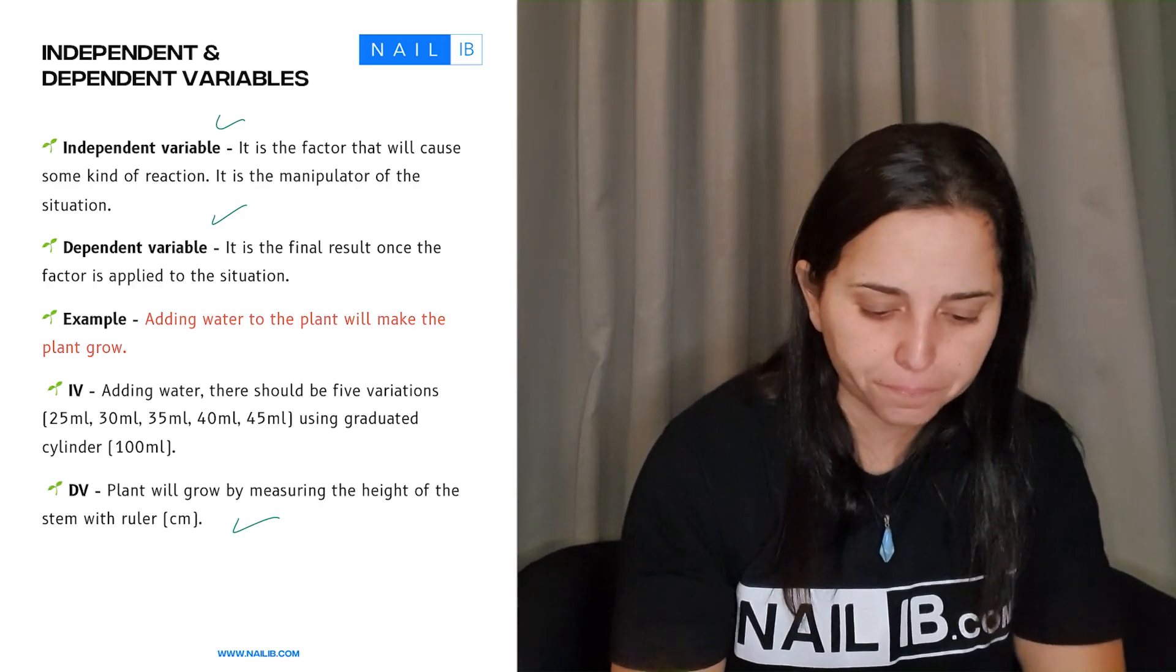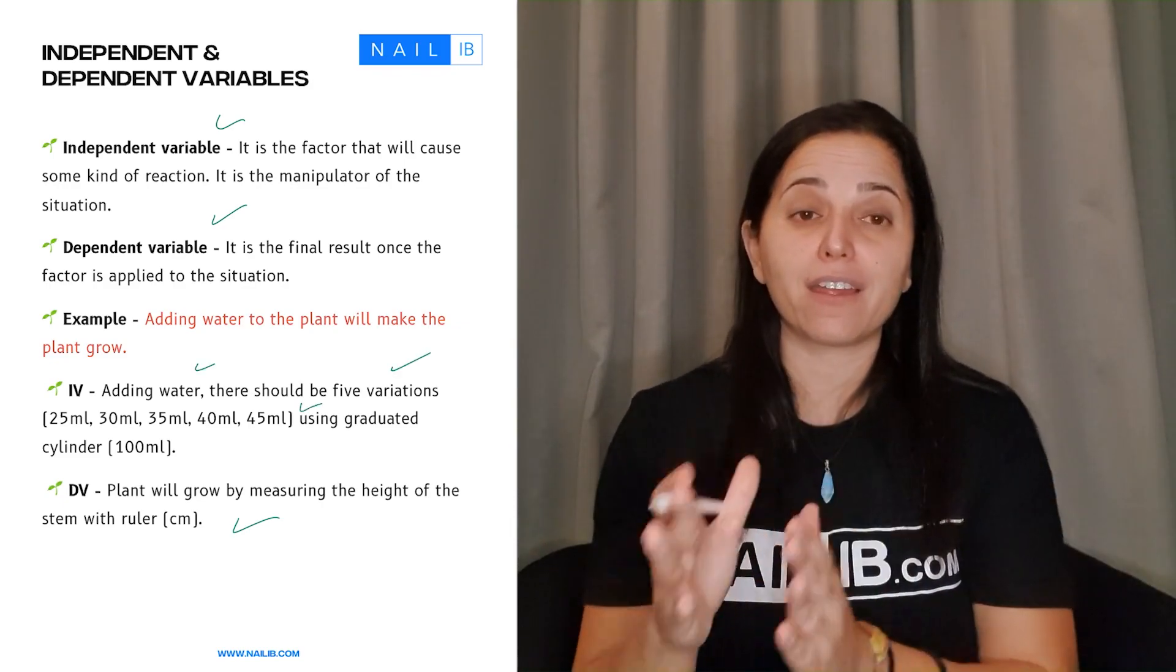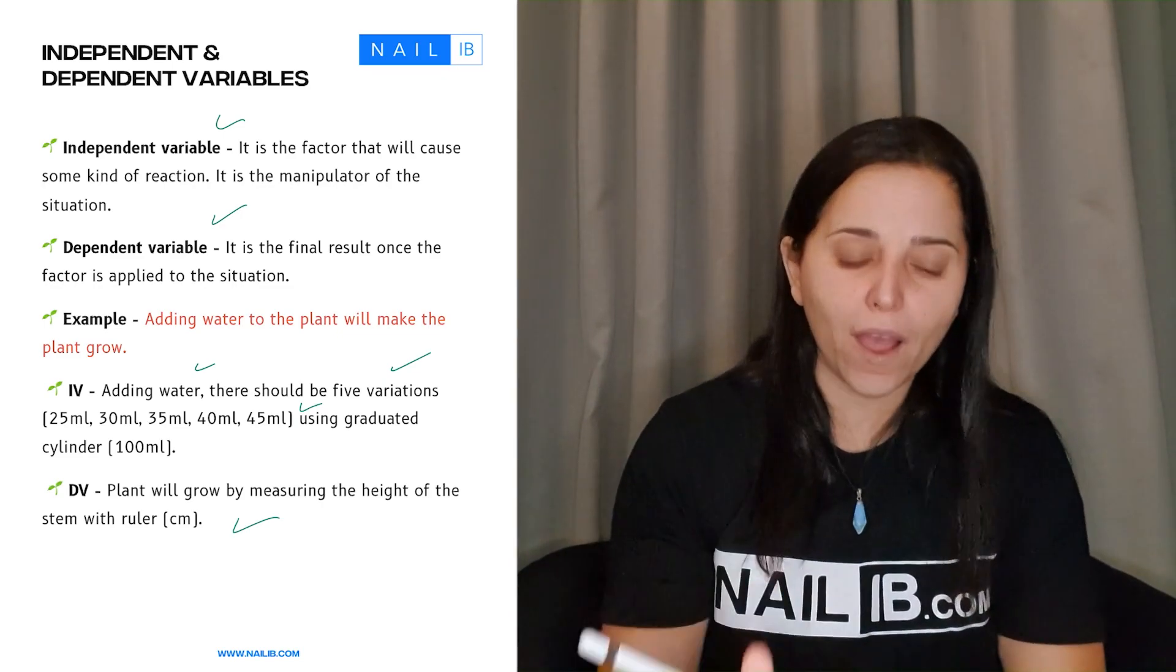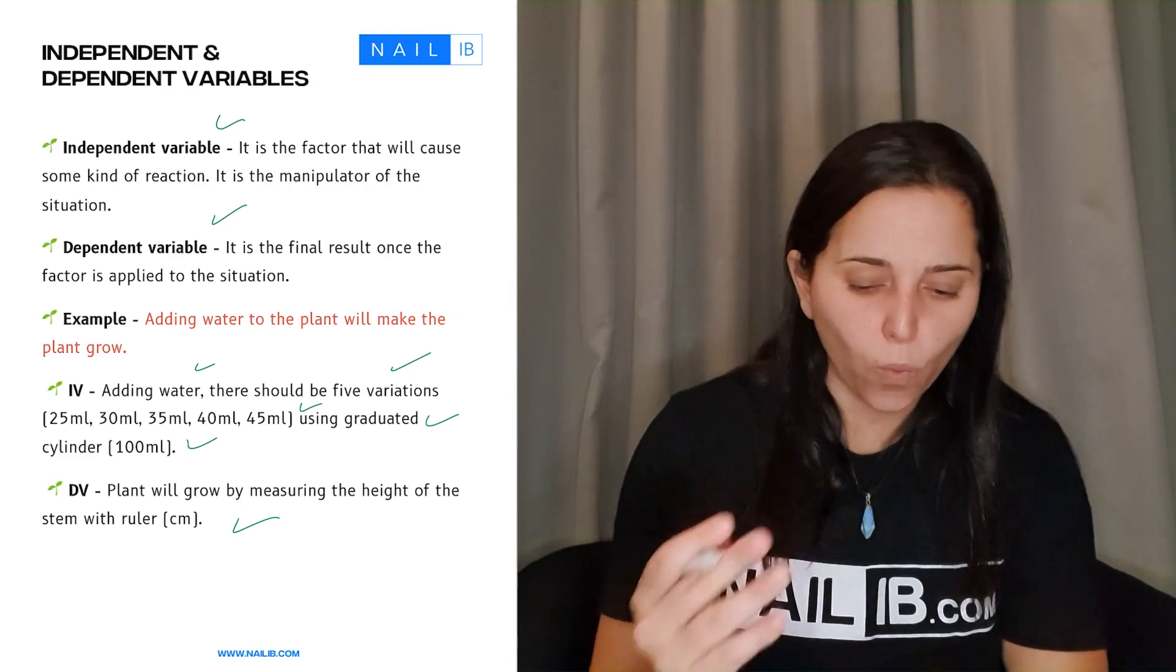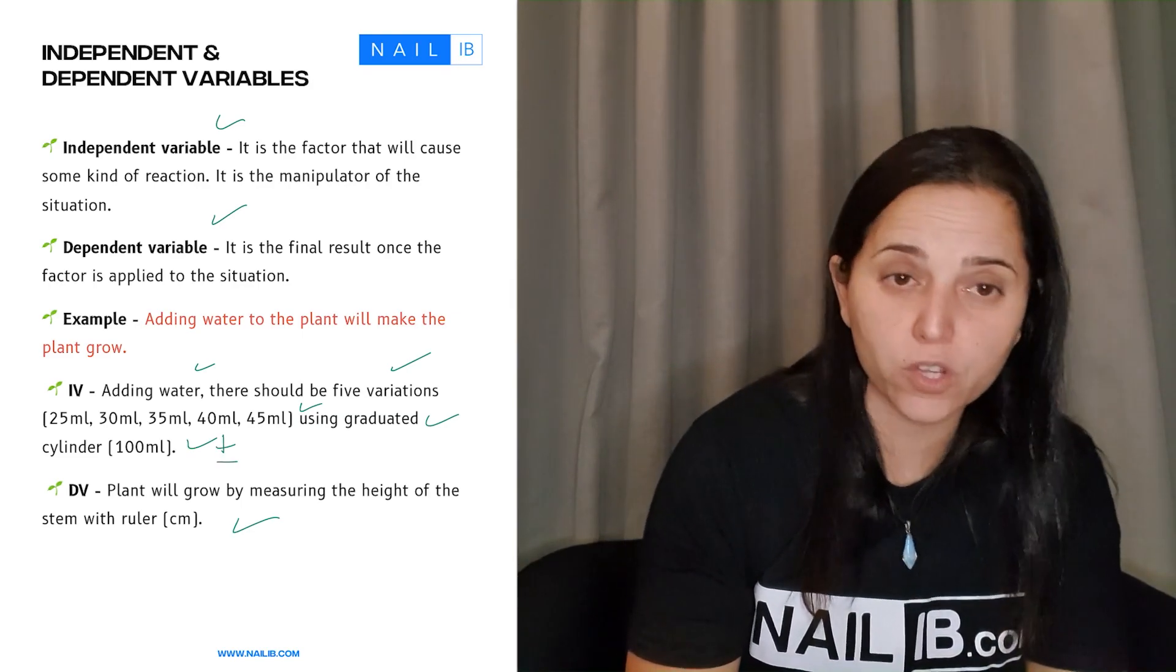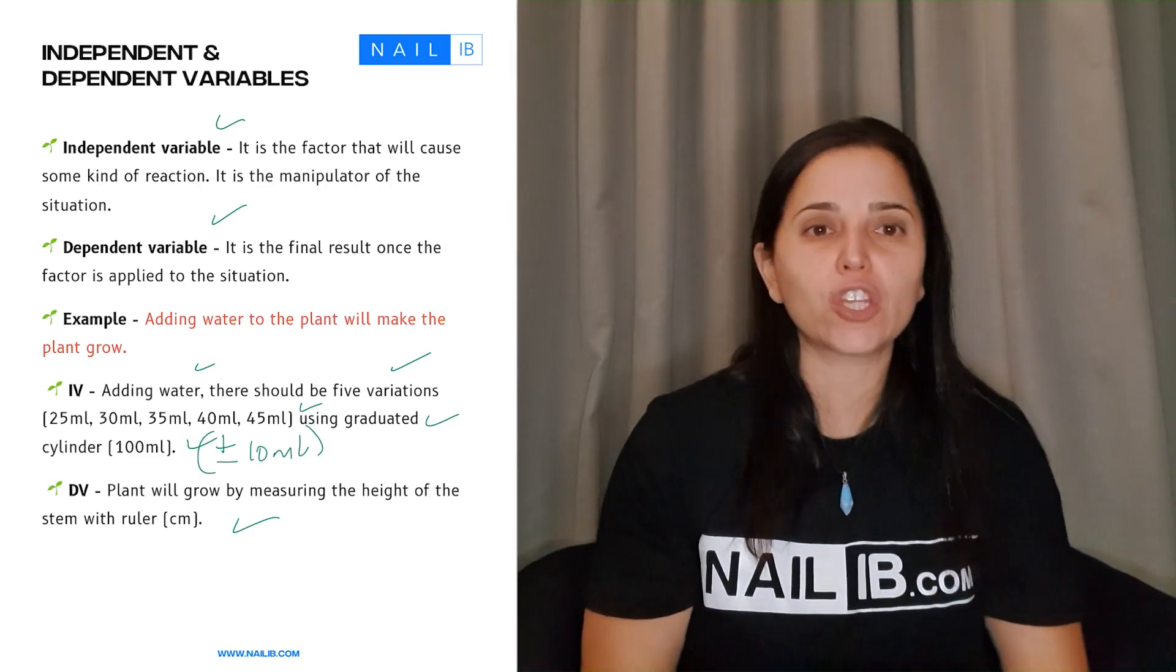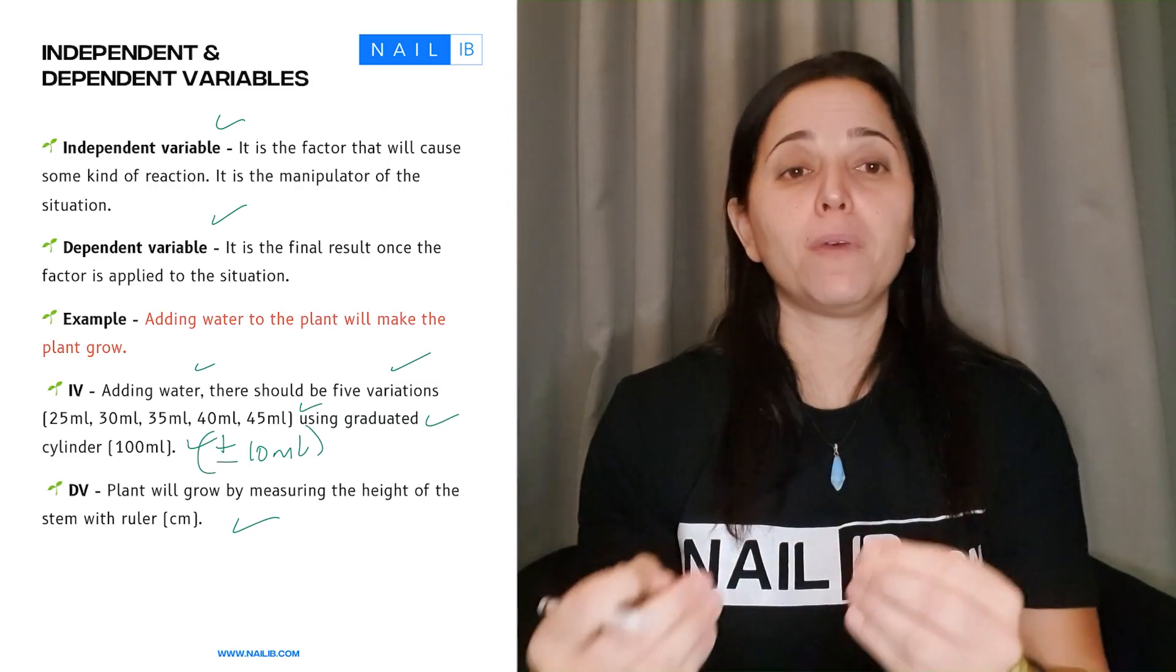Like in this example right here adding water there should be five variations. Look he put the five variations and the units in there. Be using what? The equipment and you tell me what's the equipment. Now what is missing in him is actually the uncertainty here which I don't know what the equipment might be 10 ml. I don't know what it is.